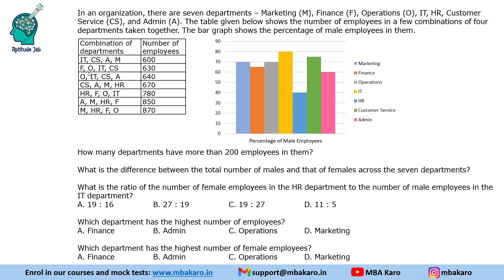If you look at the table closely, we have combinations of four departments. Every department is appearing four times - IT appears four times, CS appears four times, admin appears four times. So if you take the grand total of all these combinations, you will get four times all seven departments, which equals four times the total number of employees.